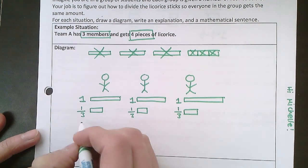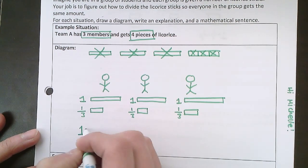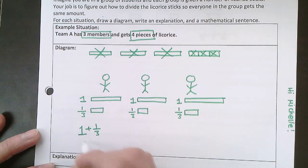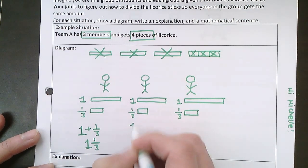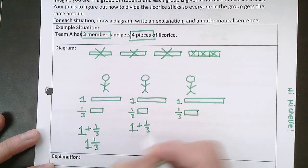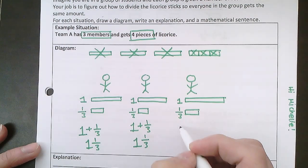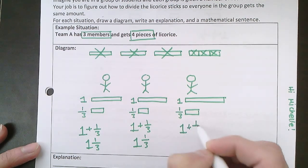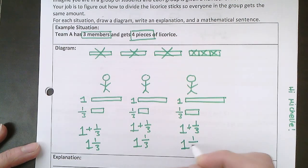For person number one, how much do they have? They have one plus one third all together. That's one and one third. Same thing here. They have one plus one third, so they have one and one third pieces of licorice. Here, same thing. One plus one third. And they have one and one third.